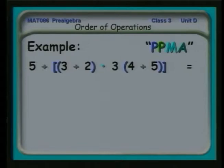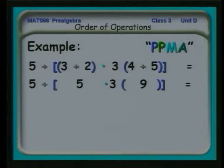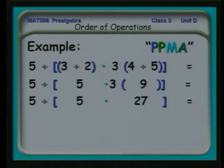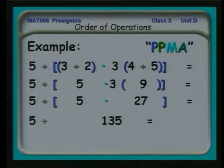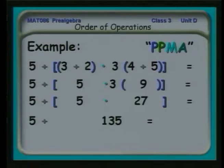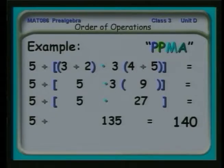Then we move out to the square brackets and deal with that next. First, we add the 3 and 2 and the 4 and 5 inside the parentheses. Next, we do the multiplication inside the brackets: 3 times 9 is 27. Then the other multiplication: 5 times 27 is 135. I've now taken the brackets away — I've covered every operation within those brackets — and I'm left with 5 plus 135. The last step is addition, giving a final result of 140.